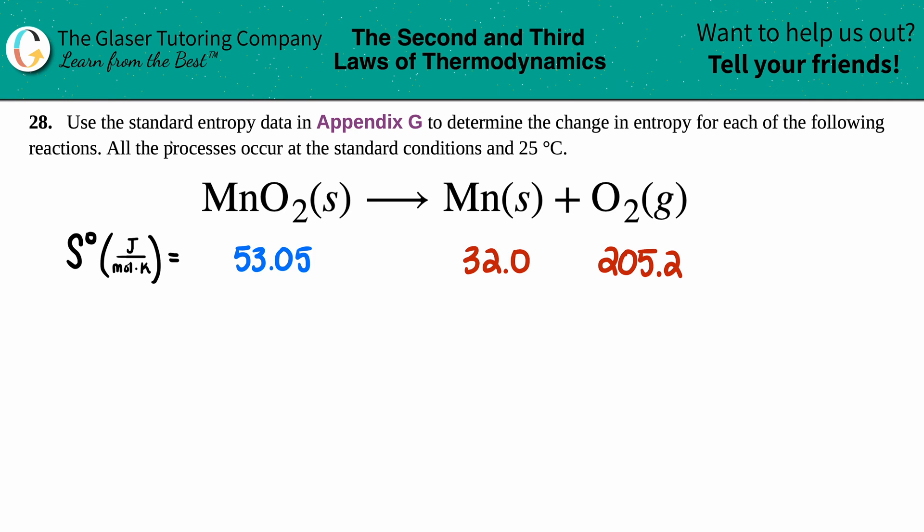Number 28: Use the standard entropy data in Appendix G to determine the change in entropy for each of the following reactions. All the processes occur at standard conditions and at 25 degrees Celsius. Okay, so we have our equation here, it's balanced. We have MnO2 solid which will yield Mn solid plus O2 gas.